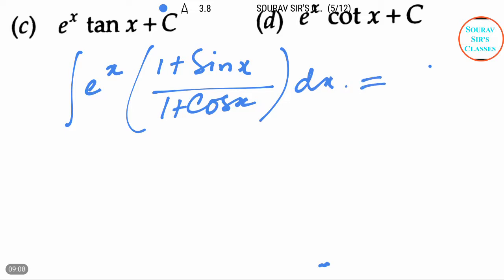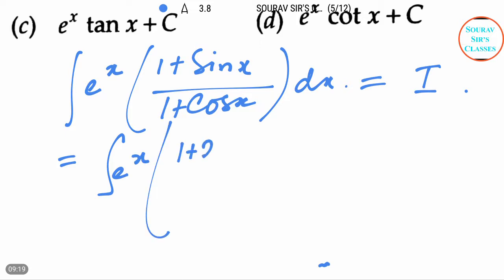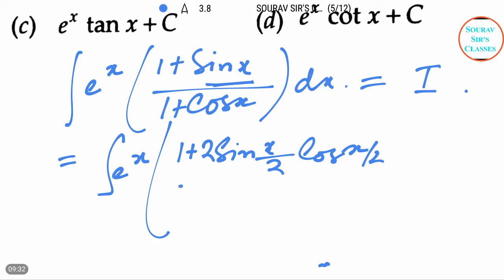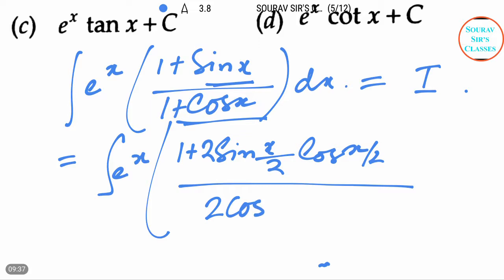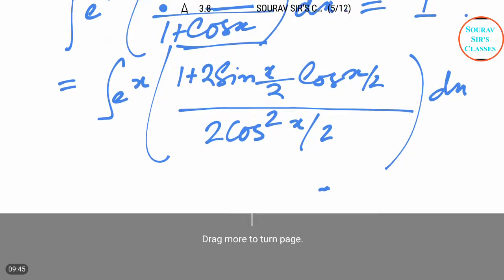This equals to integration of eˣ into (1 plus 2 sin(x/2) cos(x/2)) divided by 2 cos²(x/2) dx. We can write sin x as 2 sin(x/2) cos(x/2) and 1 plus cos x as 2 cos²(x/2).